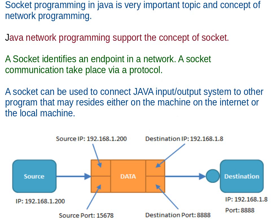Socket programming in Java is a very important concept, as well as for network programming. Java network programming supports the concept of a socket, which identifies an endpoint in a network via a protocol. Socket communication can be used through the Java I/O system to communicate with other programs that may reside on this machine or on another machine, which is called a server.